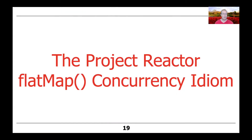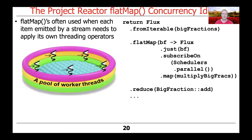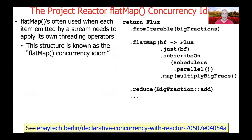Now that we've talked about flatMap, let's discuss the Project Reactor flatMap concurrency idiom and walk through a more detailed example. FlatMap is often used when each item emitted by a stream needs to apply its own threading operators — in other words, you want a bunch of computations to take place in a pool of threads. This is known as the flatMap concurrency idiom.